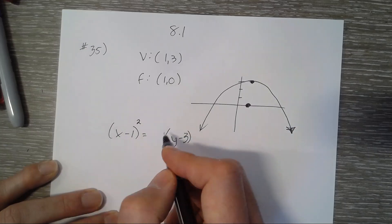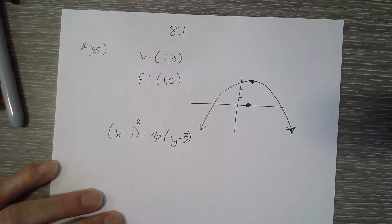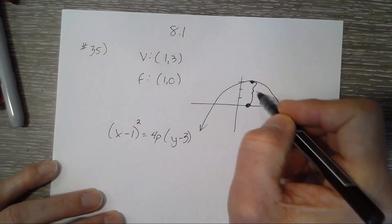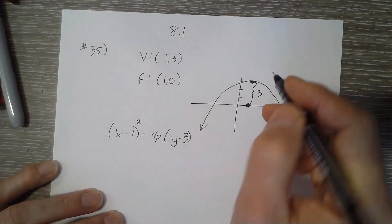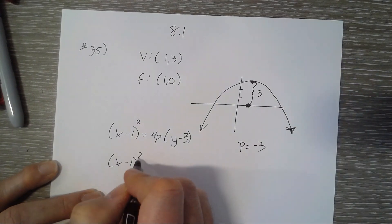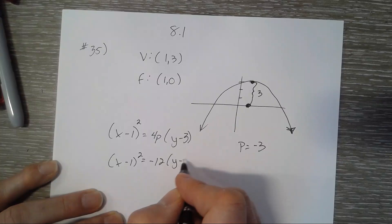We know that p here is 1, 2, 3, and since it opens down, p is negative 3. So 4 times negative 3, and then we have the rest in standard form.